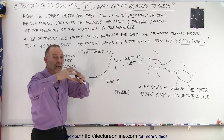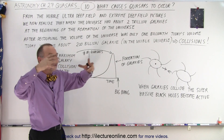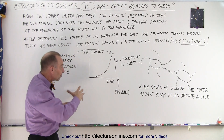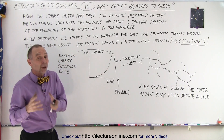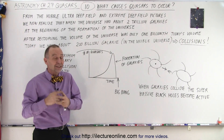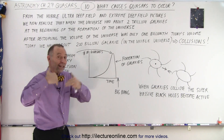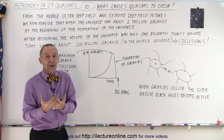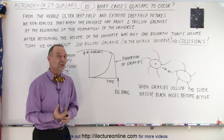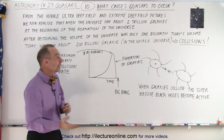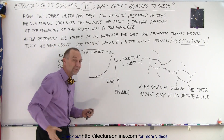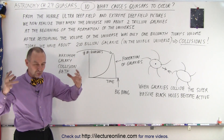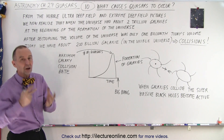As more and more galaxies merged and became larger, and as the universe expanded, the space between galaxies increased and fewer and fewer quasars existed. Eventually, galaxies became so far apart that galaxy collisions are now relatively rare. That said, our own Milky Way and our neighbor Andromeda will one day collide. Our galaxy has a supermassive black hole of several million times the mass of the sun, and when the two galaxies collide, our Milky Way will produce a quasar. Quasars will still happen in the future, though much more rarely than in the past.